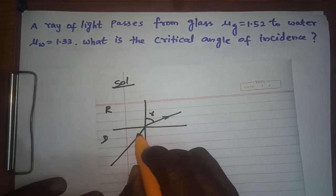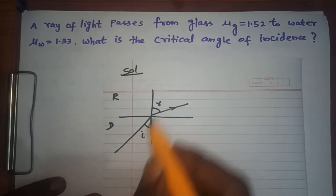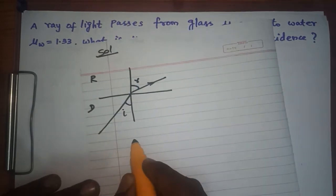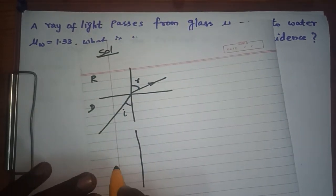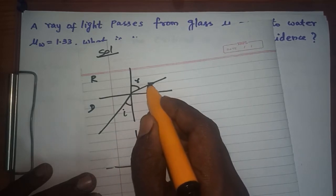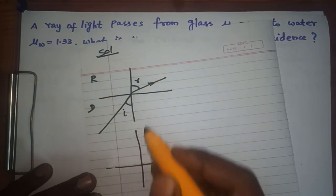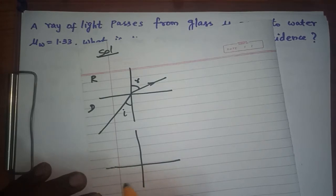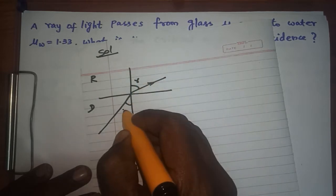When denser to rarer, it bends away from the normal. So this is a refracted ray and this is your incident ray. Now, what is the critical angle of incidence? Suppose if the ray traveling from one medium to another makes an angle of 90 degrees.